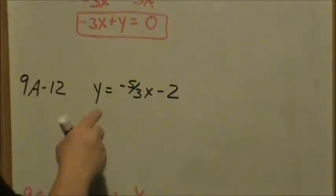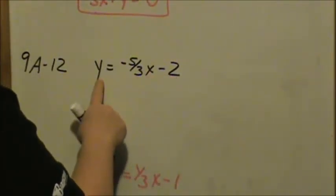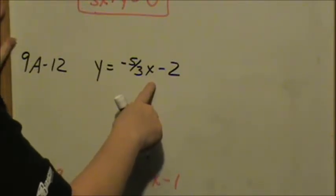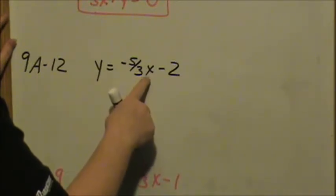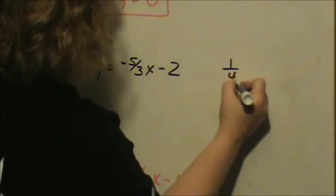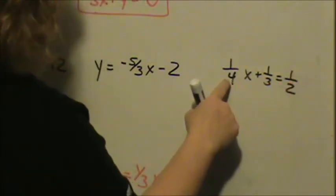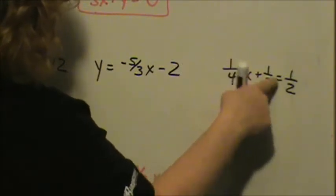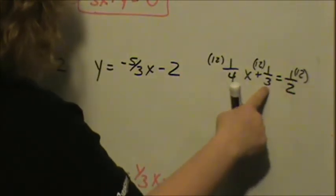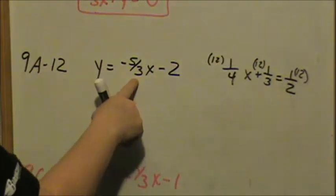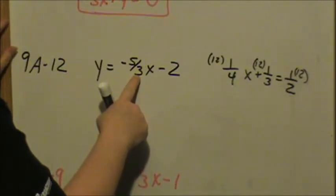Now let's look at 9a12. We have y equals negative 5 thirds x minus 2. I have a slope of negative 5 thirds and a y-intercept of negative 2. This is in slope-intercept form and I want it in standard form — x's and y's on the same side, whole numbers on the other side. When you have fractions, my recommendation is to get rid of fractions first before moving x over. Just as with earlier problems, we multiply through by the least common multiple to get rid of fractions. The only denominator I have is 3, so I want to multiply everything by 3 for that denominator to cancel.